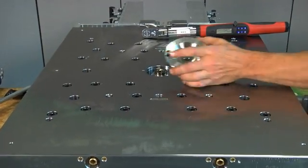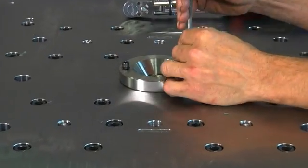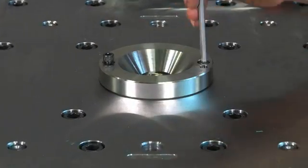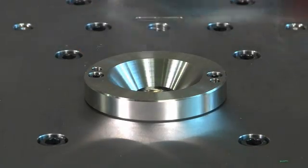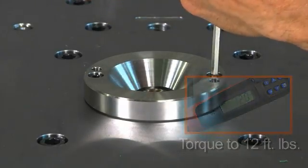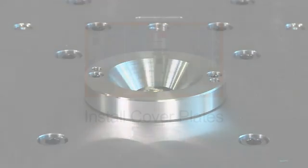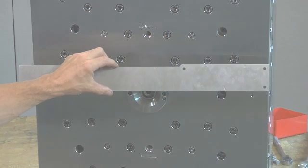Now we're going to install the locating ring and torque to 12 foot-pounds. At this point, we're going to install cover plates.